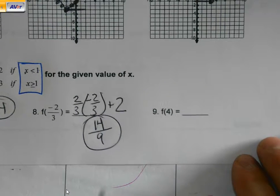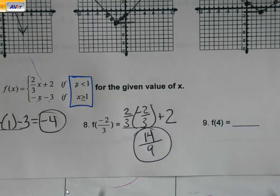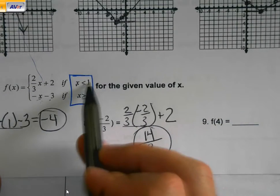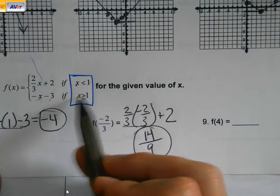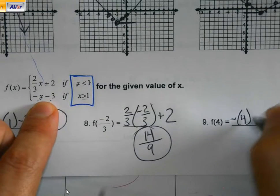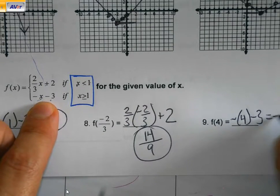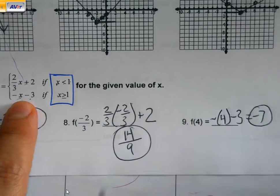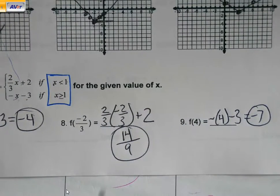Last one. I've got to swing back over here so I can see what's going on. So 4. Is 4 less than 1? No. Is 4 greater than 1? Yes. Plug the 4 in. Negative 4 minus 3 is negative 7. So we've got you set with that as well.